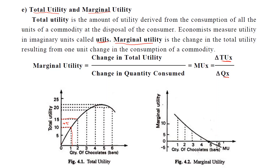Marginal utility is the change in utility. By consumption of one unit, utility was 10. When you consume the second unit, it becomes 15. So the difference is 5 — that is the marginal utility at the second unit. For the third unit, total utility increases to about 18, so the difference is 3. When you join these points, you will get the marginal utility curve.